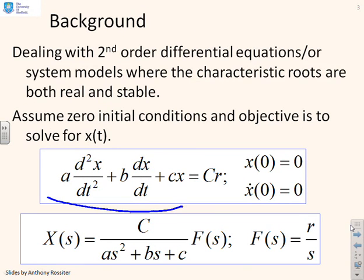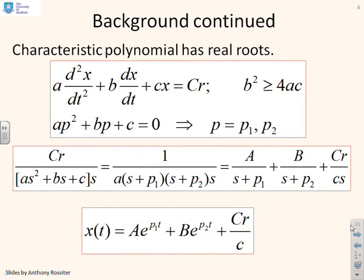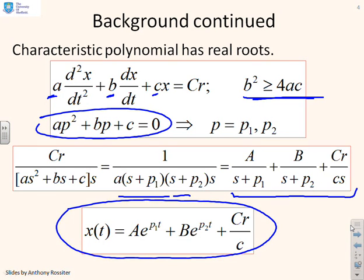Some background on second-order systems. You can see a typical differential equation representation here, or a transfer function representation here — we will deal with both. We're going to assume zero initial conditions for convenience, because non-zero initial conditions don't really add insight; they just complicate the number crunching. Because we're dealing with overdamped systems, we're making the assumption that b² is bigger than 4ac. You'll see coefficients a, b, and c, and therefore the polynomial has real roots. You can solve for the characteristic roots using this polynomial. The implication of real roots is that the inverse Laplace comes from a form separable into simple residues a/(s+p1) + b/(s+p2) + something/s, so the solution will comprise a couple of exponentials and a constant.